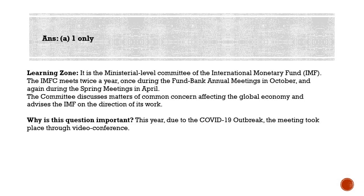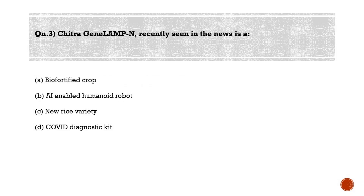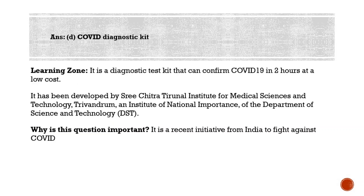Moving to the last question for the day: Chitra Gene Lamp-N, recently seen in the news, is — option A: bio-fortified crop, option B: AI-enabled humanoid robot, option C: new rice variety, or option D: COVID diagnostic kit. The correct answer is option D. It is a COVID diagnostic kit developed by the Sree Chitra Tirunal Institute for Medical Sciences and Technology, located in Trivandrum, Kerala. This test can confirm COVID-19 in two hours at low cost.